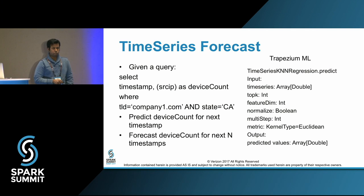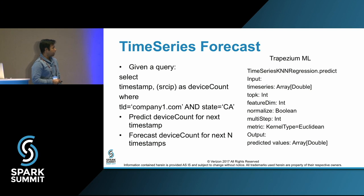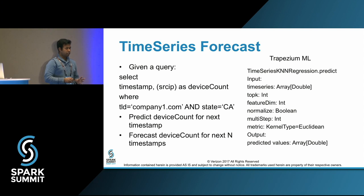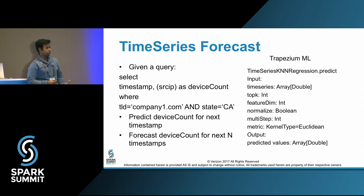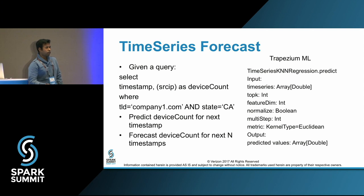The problem doesn't stop there. Our real use case is: given an OLAP query like 'select timestamp, source IPs as device count' where the query has AND/OR/NOT combinations of TLD and location, we get the historical data that matched. But what we really want to find is the device count on the next timestamp — data we have not seen — or better yet, the next five timestamps. That gives you the demand of that particular OLAP call over the next five days.